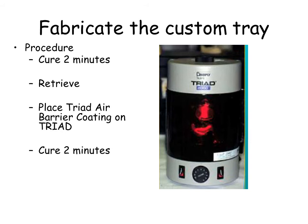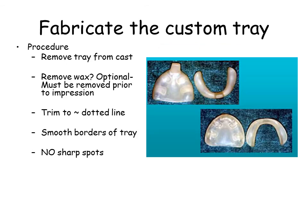Curing of the oxygen inhibited layer of the triad may be accomplished by placing a thin layer of Vaseline over the triad material and continuing to cure. The tray is then removed from the cast. Removal of the wax is optional at this point; keeping the wax may be useful in stabilizing the tray during border molding. The tray is trimmed to the dotted line, and the borders should be smooth and rounded with no sharp spots.